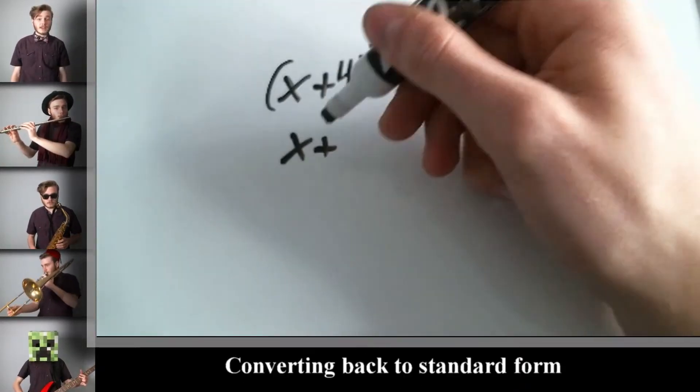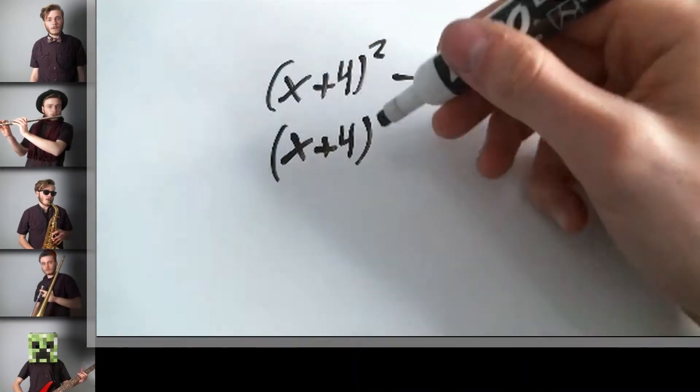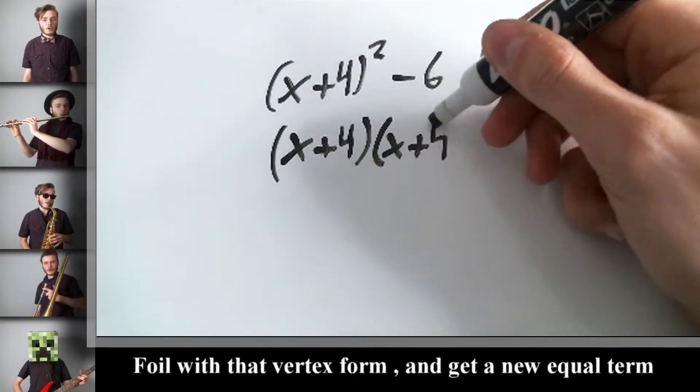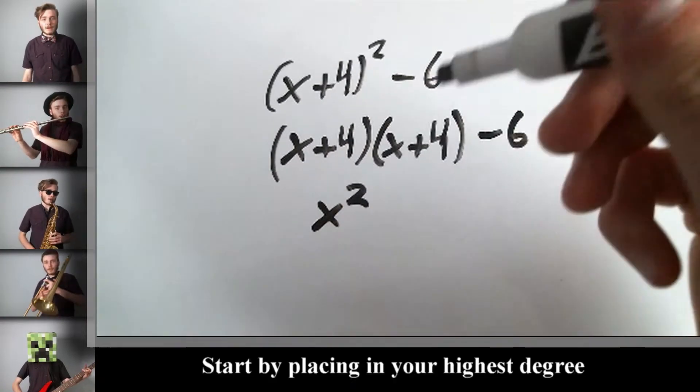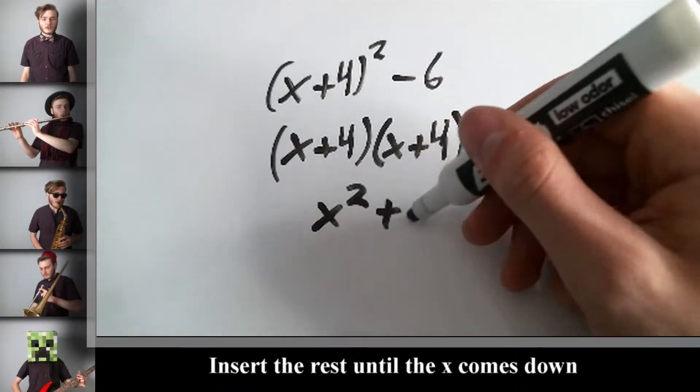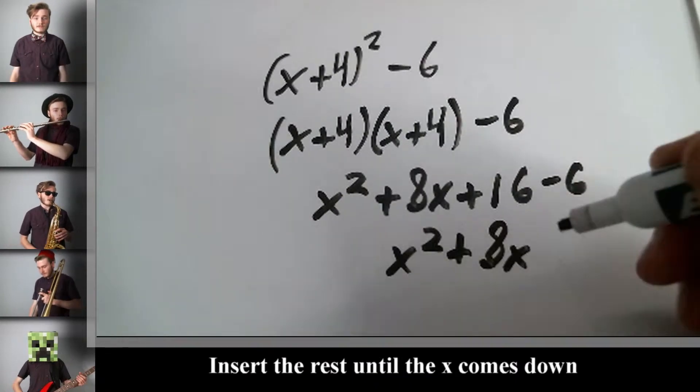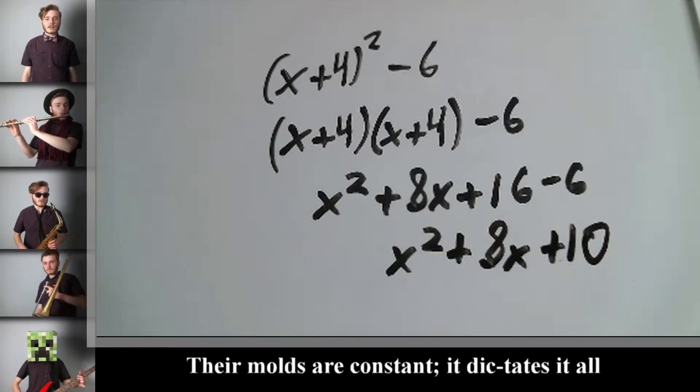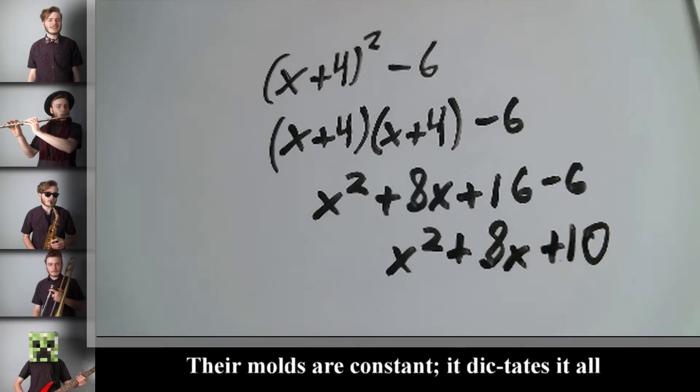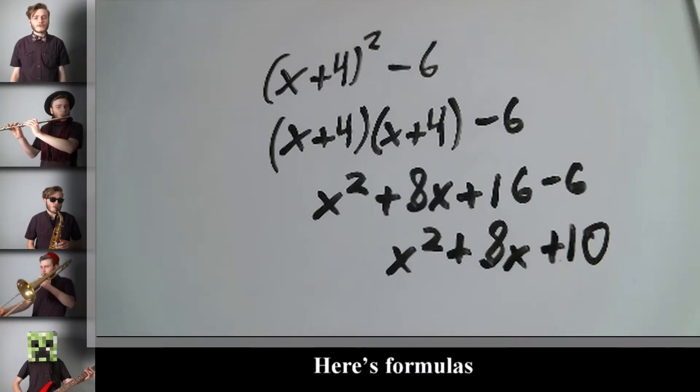Converting back to standard form. FOIL with that vertex form and get a new equal term. Start by placing in your highest degree. Insert the rest until the x comes down. Both forms have a way they're done. The mode is constant, dictates it all. Here's formulas.